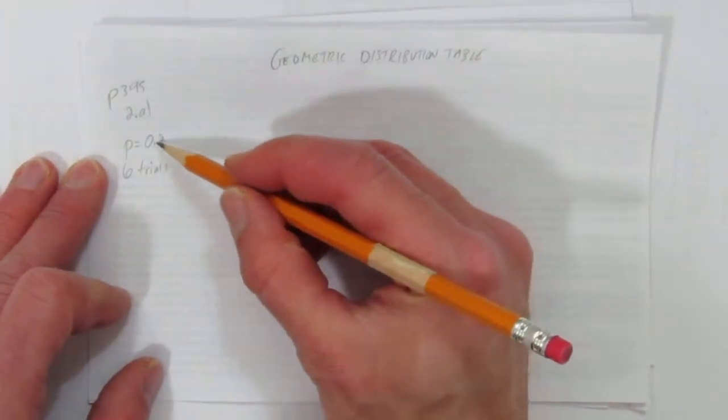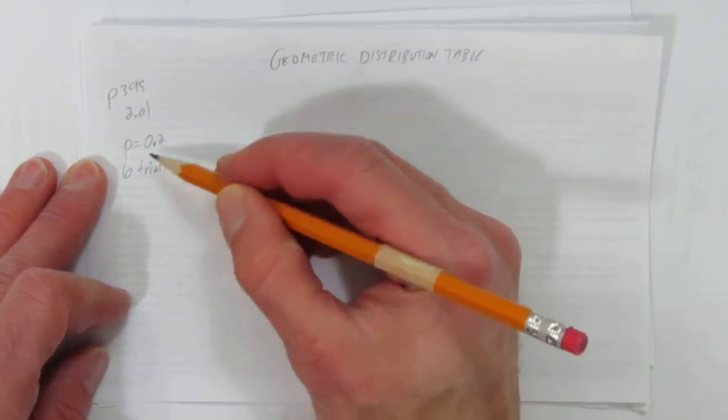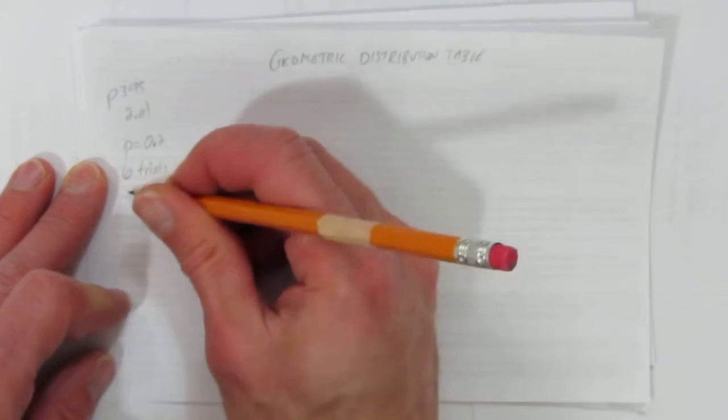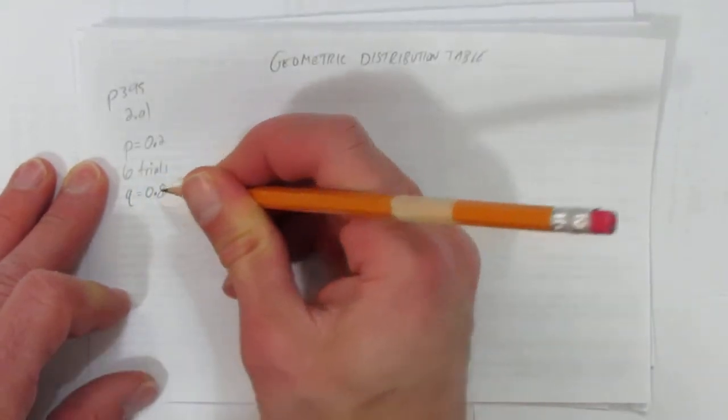The probability of success in this situation we're told is 20% or 0.2, and we're going to do 6 trials. It should be obvious that if the success rate is 20%, the failure rate, Q, will be 80% or 0.8.